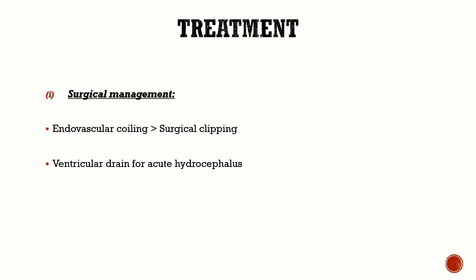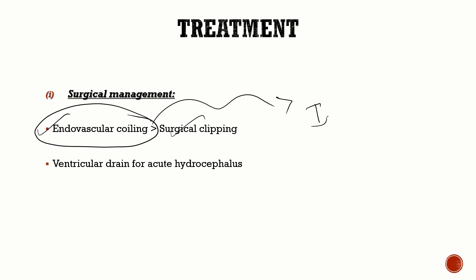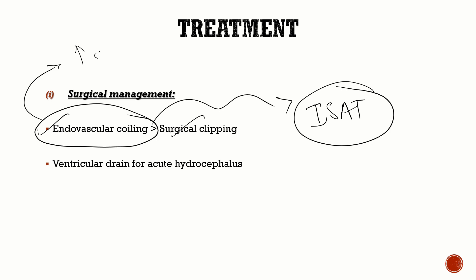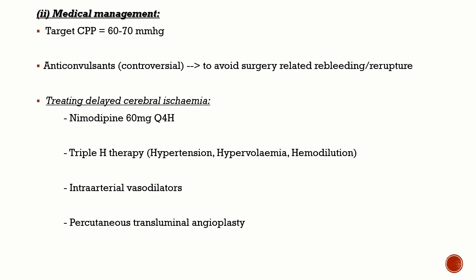For surgical management, treating the aneurysm is critical. We have endovascular coiling and surgical clipping — the preferred management is endovascular coiling, based on the ISAT study, where mortality was much less in the endovascular coiling group. In the long term, functional outcomes are similar for both. However, endovascular coiling has a slightly higher risk of re-bleed compared to surgical clipping. If the patient develops acute hydrocephalus, a ventricular drain is inserted.